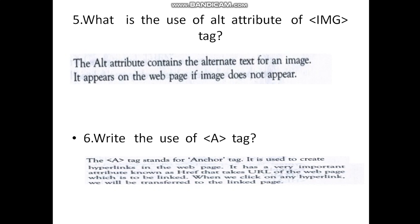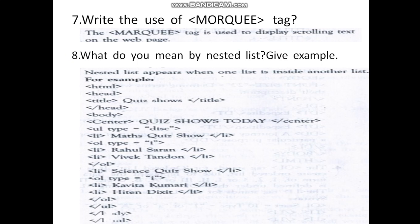Now we see the seventh question: Write the use of the <marquee> tag. The <marquee> tag is used to display scrolling text on the webpage. You can see this scrolling text by using the <marquee> tag.